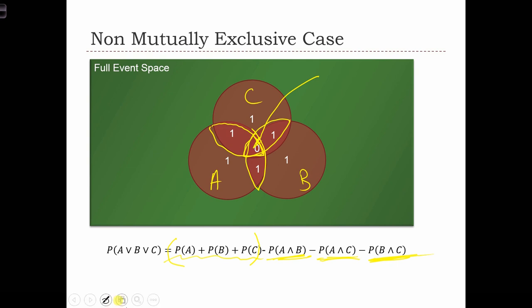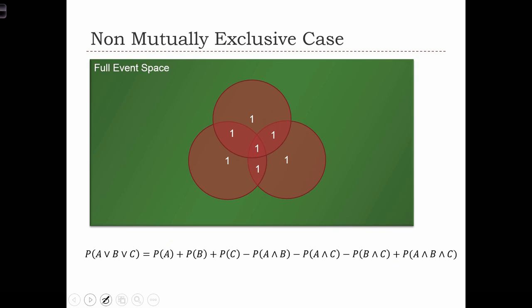So what we need to do next is add it back in. That little area that we're adding back in is the probability of A and B and C occurring all at the same time.